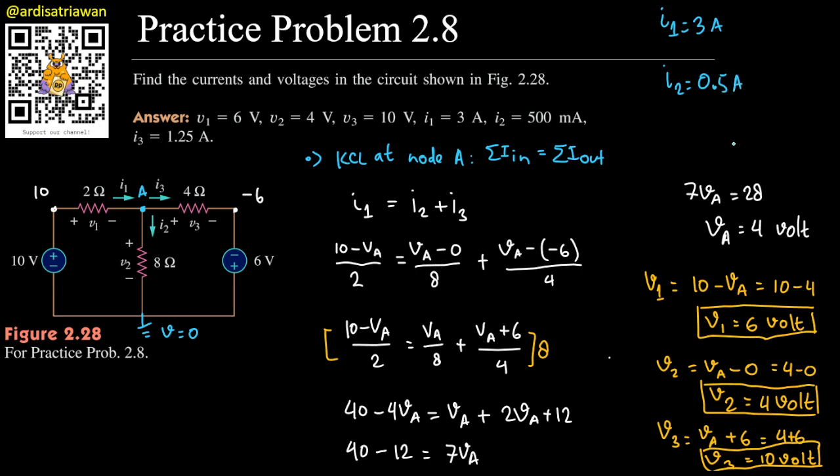And then for i3, I will have V3 divided by 4. V3 is 10 volts, so 10 divided by 4, which is 5 divided by 2, which is 2.5 amperes.